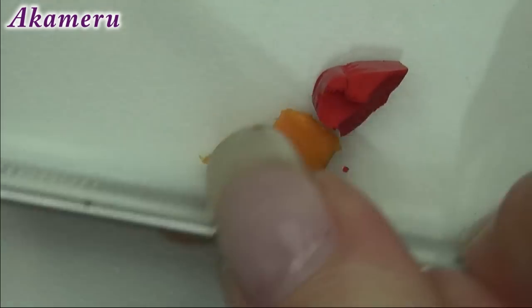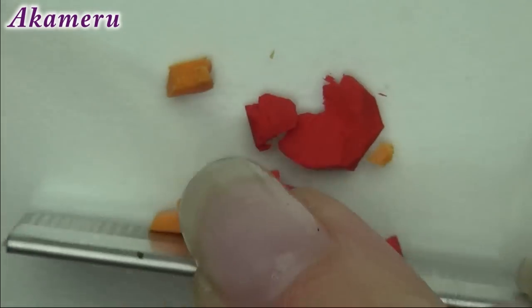For the tomato sauce, chop up some red and orange clay. I also chopped up some dried moss.